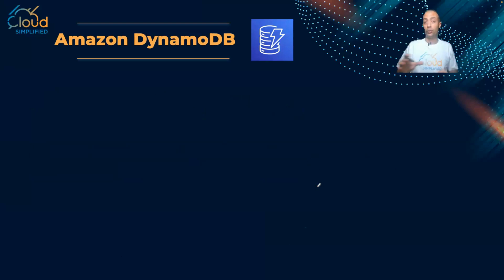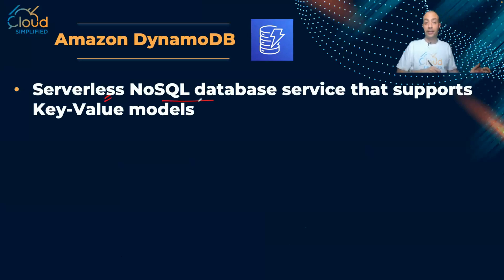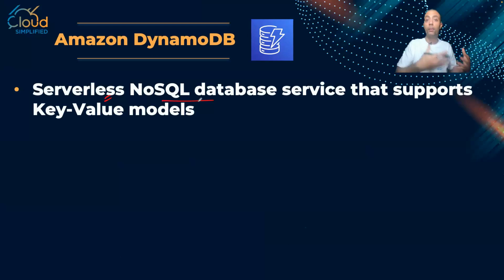The AWS offering for non-relational databases is what we call Amazon DynamoDB. DynamoDB is a very interesting offering from AWS. First of all, DynamoDB is a serverless NoSQL database — a serverless non-relational, key-value pair database. When we talk about serverless, it means I don't need to provision anything upfront. It scales according to my usage.